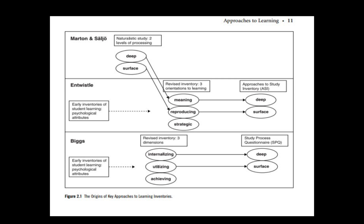In this diagram you can see three different researchers, the different terms they used to describe surface and deep approaches, and the different data collection methods they used. You'll see that Biggs used study process questionnaires and study inventories, and you can see the commonalities they share between them.